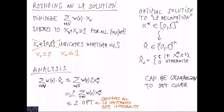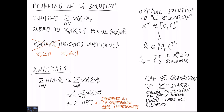This 2-approximation for vertex cover can be generalized to set cover, and in fact that is what many textbooks do. In the set cover problem, there is a collection of sets and you need to choose a sub-collection that covers all elements in the ground set. Please read the book to learn more about that.